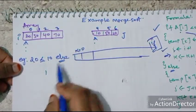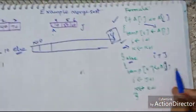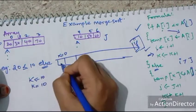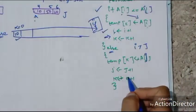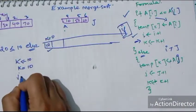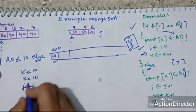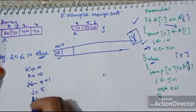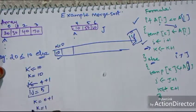The first condition: is 20 lesser than or equal to 10? No, it is not, so the else part is executed. K equals A of J, and J is 10, so K equals 10. The first index is filled with 10. Then J equals J plus 1, so J equals 4 plus 1 equals 5, and K equals 0 plus 1 equals 1.